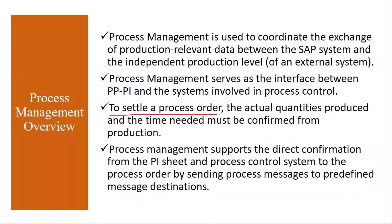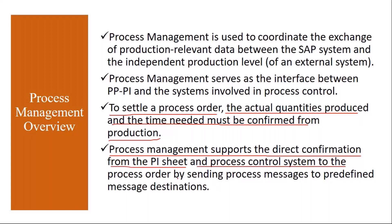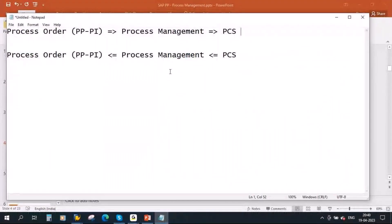To settle a process order, the actual quantity produced and the time needed must be confirmed from production. Instead of doing manual transactions, the process control system or PA sheet provides a screen where users input all the values, and those values come back and get updated in the process order. Process management supports direct confirmation from the PA sheet to the process order by sending process messages to predefined message destinations.